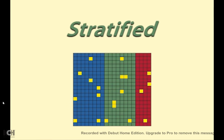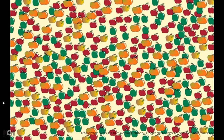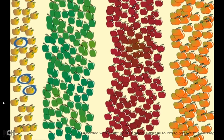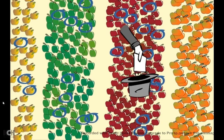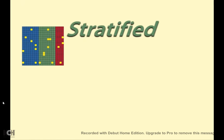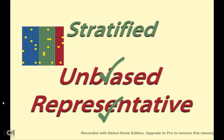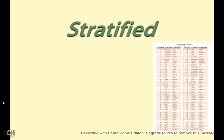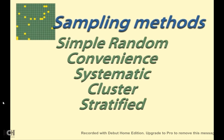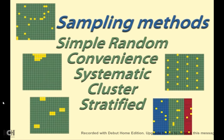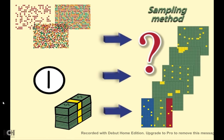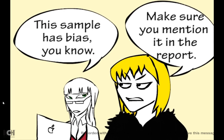Stratified sampling divides the population into groups chosen specifically to represent different characteristics such as ethnicity, location, age, or occupation. Within each group, a random sample is taken, sometimes in proportion to the size of the group. Stratified sampling can lead to a very good random representative sample. However, it can be complex to administer and requires a sampling frame with considerable information about the population. You should attempt to use the sampling method that produces the best result for the resources available.